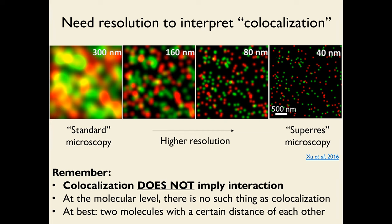The statements you're making at best are that two molecules are within a certain distance of each other — a distance given by the resolution of the technique. The analogy I like is: interaction would be if I am shaking someone's hand, but co-localization analysis can only place that person and myself in the same room, on the same floor, or in the same building, depending on the resolution of microscopy used.